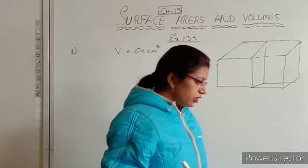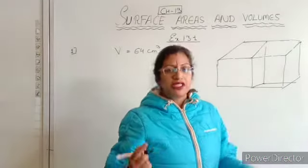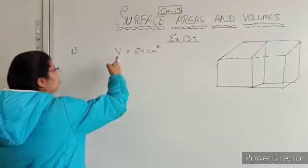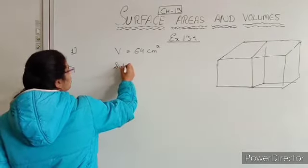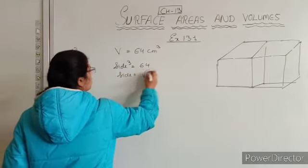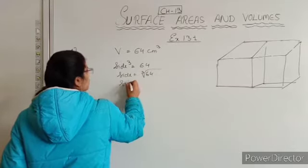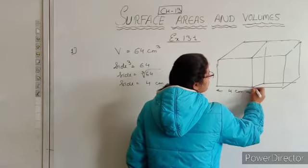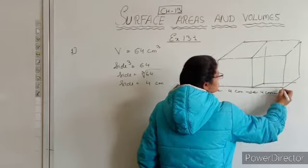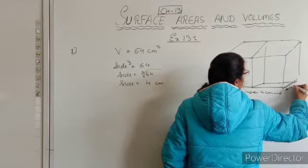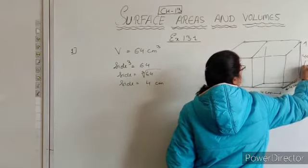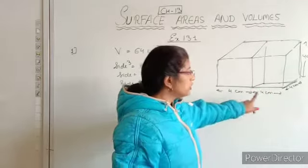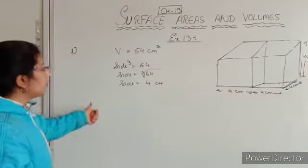Find the surface area of the resulting cuboid. Now it becomes a cuboid and we need to find its surface area. We have to find the side length of the cube. Volume of a cube is side cubed, so side cubed equals 64, and side equals the cube root of 64, which is 4 cm. So the side of each cube is 4 cm. For the cuboid, breadth is 4 cm and height is 4 cm. The only difference from the cube is in the length — 4 plus 4 is 8 cm. Breadth and height remain the same at 4 cm.